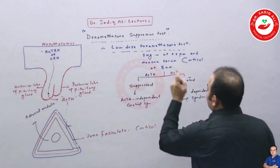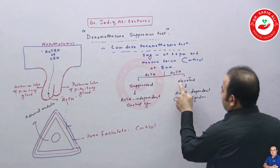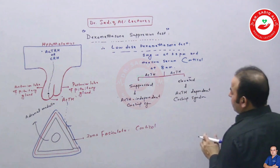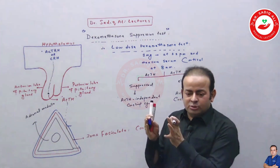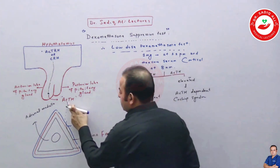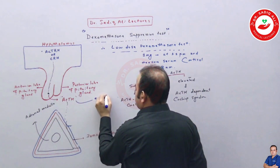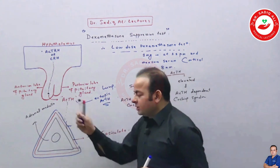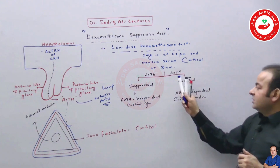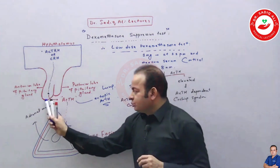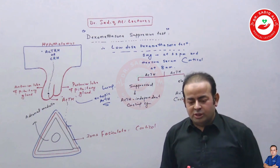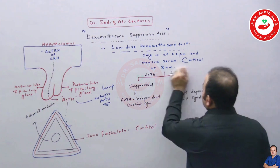If low dose dexamethasone does not suppress ACTH and it remains elevated, the problem is either in the pituitary gland or is ectopic. If ACTH is high and cortisol is also high, it means ACTH is coming either from the pituitary or from the lungs as ectopic ACTH. To differentiate between pituitary and ectopic sources, we proceed to the high dose dexamethasone test.